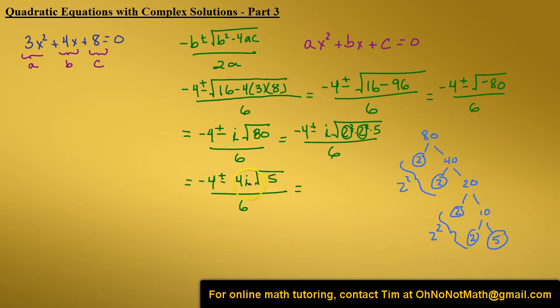Now let's break this fraction up into two terms, a real part and an imaginary part. So we have negative 4 sixths plus or minus 4 over 6i times the square root of 5. That can be reduced. Negative 4 sixths equals negative 2 thirds plus or minus 2i square root of 5 over 3.